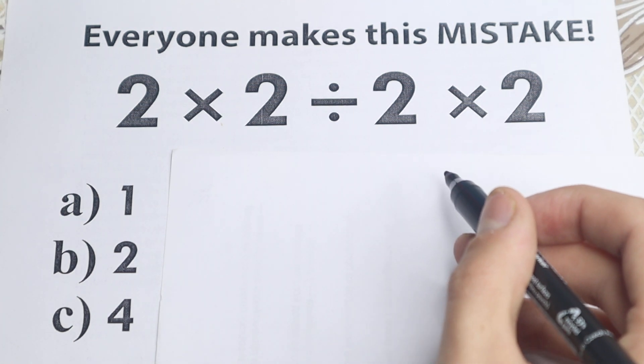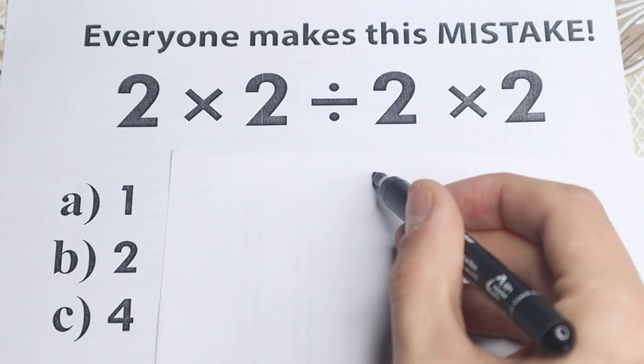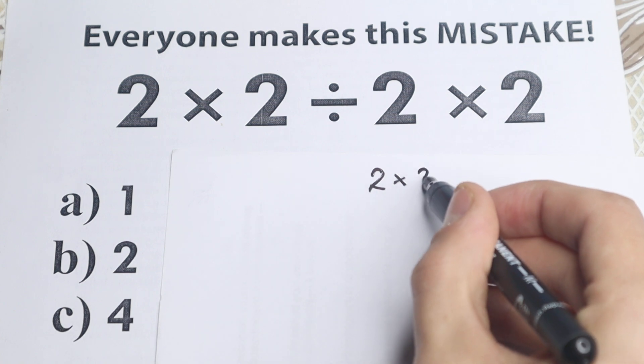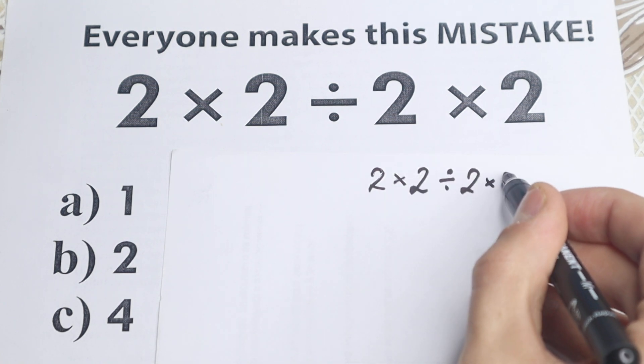Okay, the first approach, how a lot of students solve this. They say okay we have this problem, I just rewrite it right here. So 2 times 2 dividing by 2 and times 2. A lot of students solve it like that.